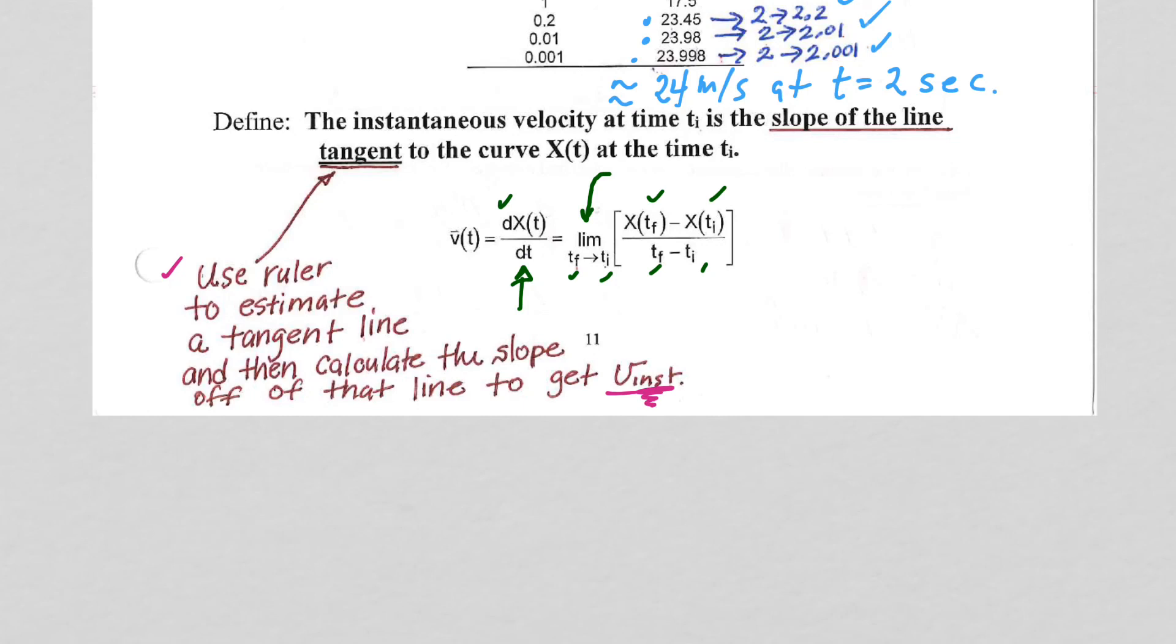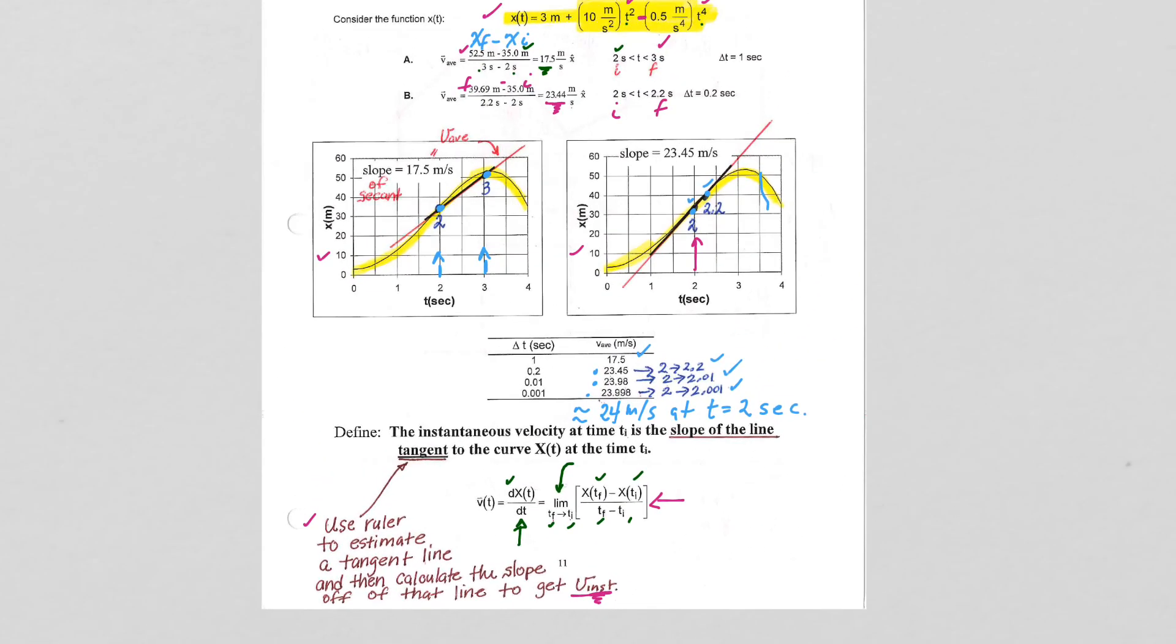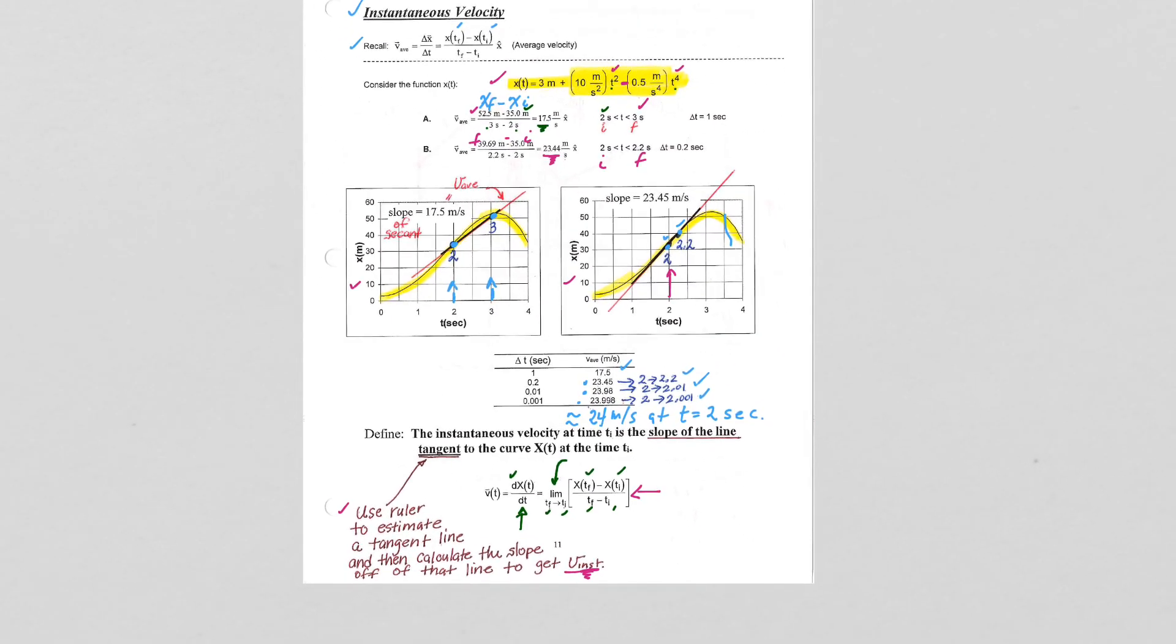Once we introduce calculus, we'll see that this calculation represents a first derivative of the function x(t). We'll be using more fancy calculus language to do instantaneous velocity. But this page of notes absolutely shows us conceptually what calculus is doing when we go from an average velocity to an instantaneous velocity.